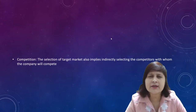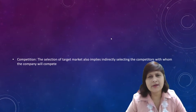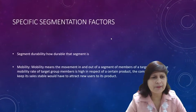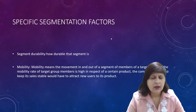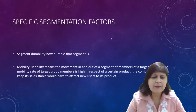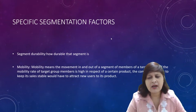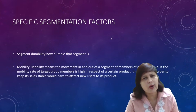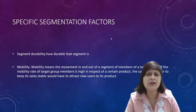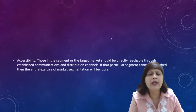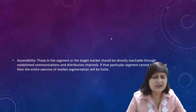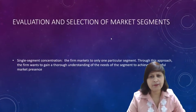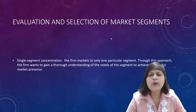When selecting a target market, competitors will obviously be present, so do a SWOT analysis — understand strengths, weaknesses, opportunities, and threats for yourself and your competitors. Consider segment durability, mobility — the movement of members in and out of a segment due to changes in income or age — and accessibility, meaning those in the target segment should be reachable through established communication channels.